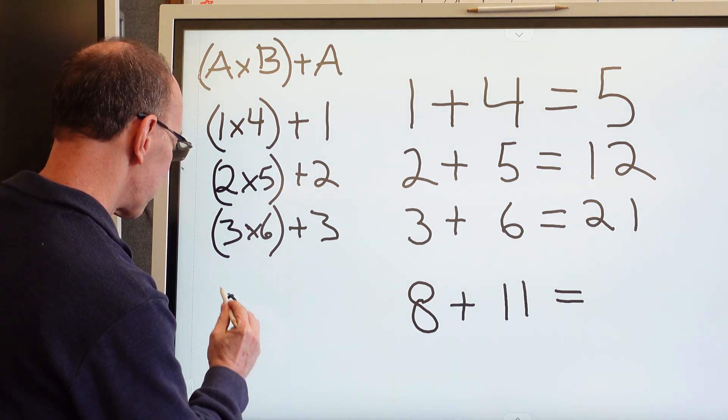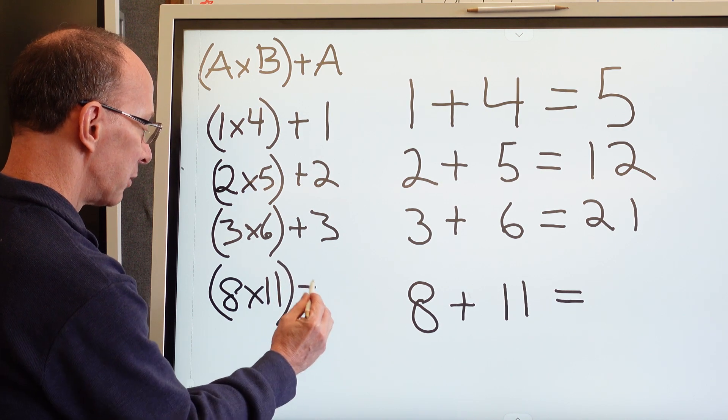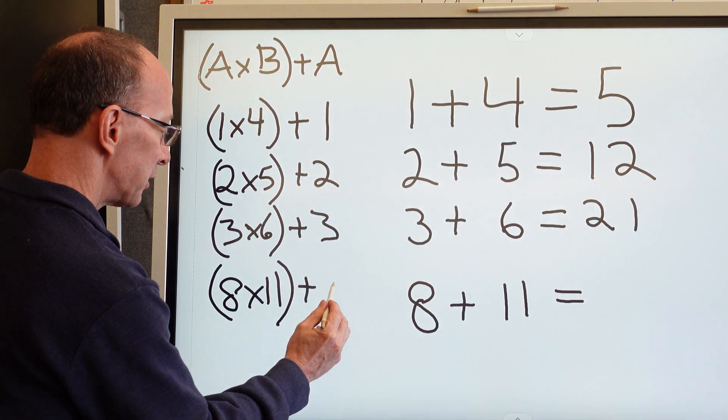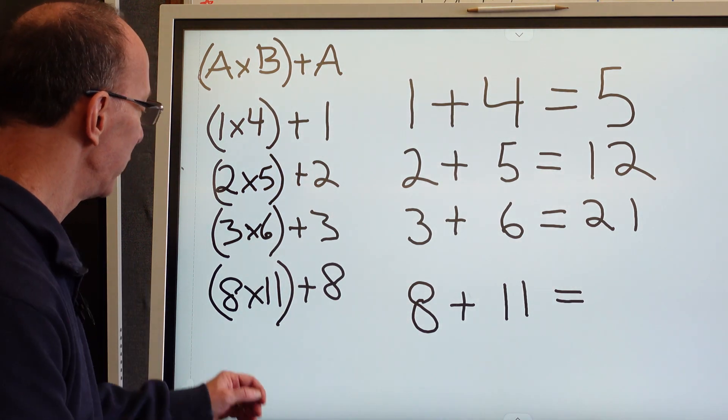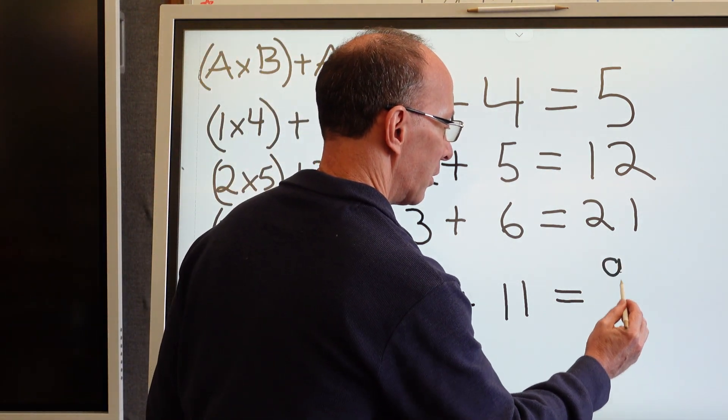So then I have 8 times 11, which is 88, plus the 8. So we have 88 plus the 8, which is 96.